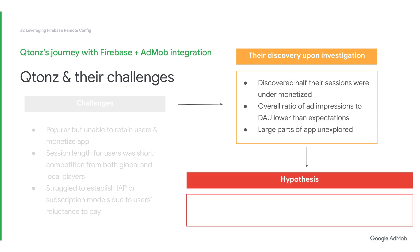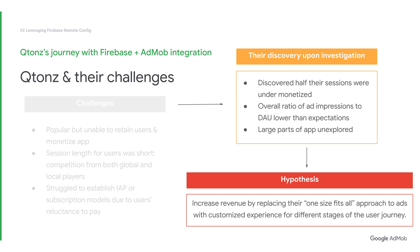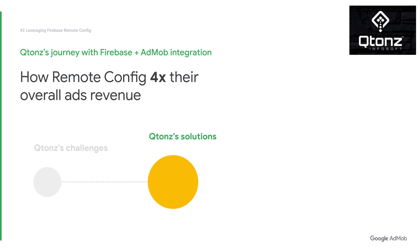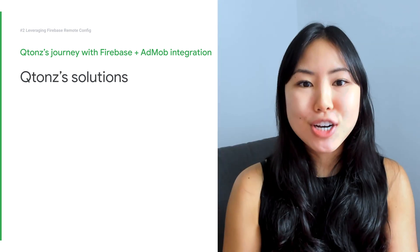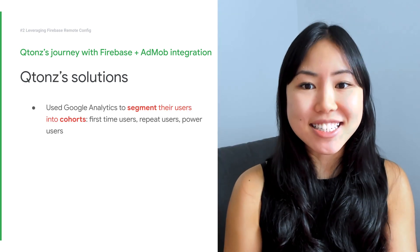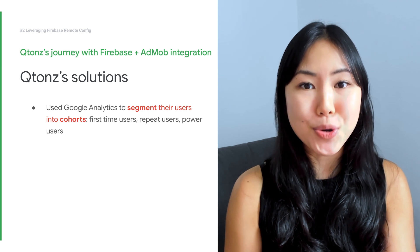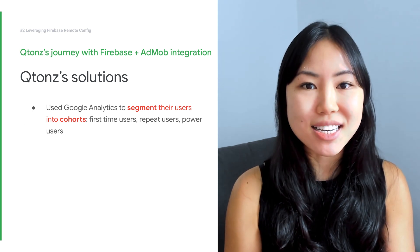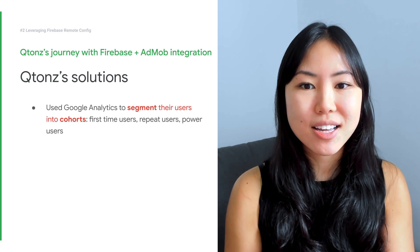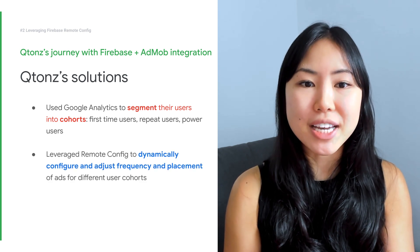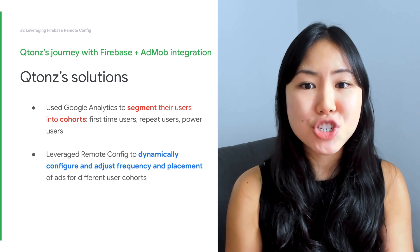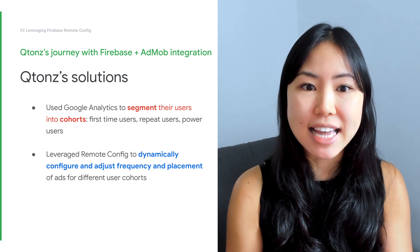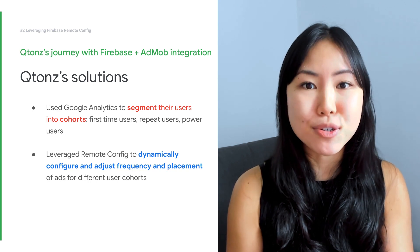Additionally, despite being able to generate some app revenue, they struggled to establish alternative monetization models such as in-app purchases or subscriptions due to users' reluctance around paying for in-app content. Upon reviewing their Firebase and AdMob data, they discovered that about half of their sessions were under-monetized, with an overall ratio of ad impressions to DAUs lower than expectations. They also found out that users were not exploring large parts of the app. The team hypothesized that replacing their one-size-fits-all ads with customized ones would increase revenue. Qtons tested this by using Google Analytics to segment their users into cohorts: first-time users, repeat users, and power users.